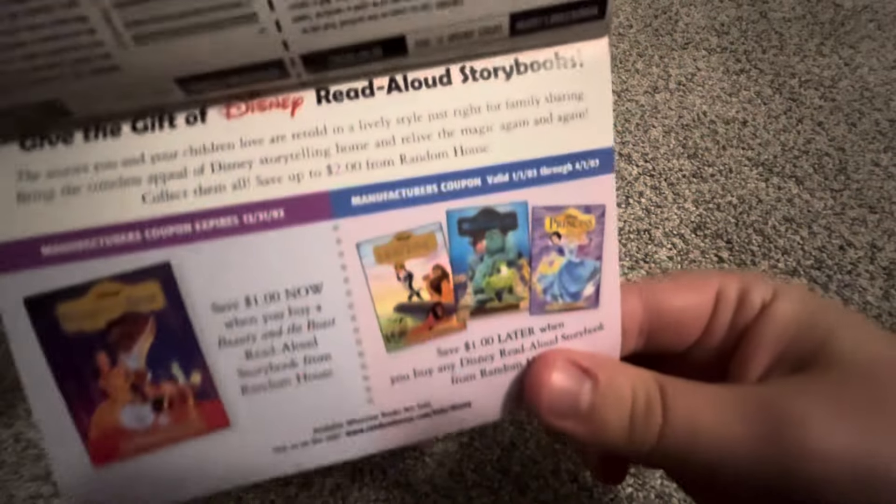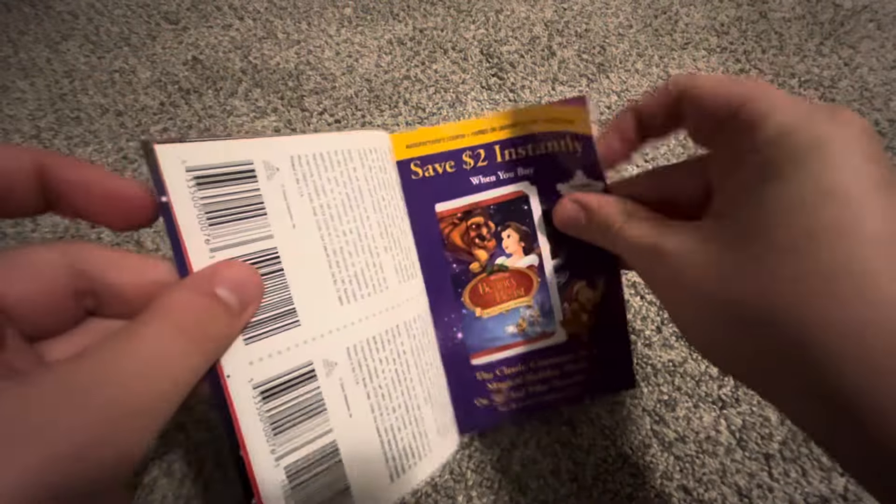And then we have the 1992 French Canadian VHS of it. Got this tape last year in 2023. This is the spine, and the back. It's all in French. And here's the tape. The ink label, Sorcerer Mickey down there. And no print date on this tape.